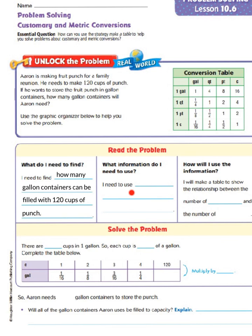So, I need to use the number of cups being made and the number of cups in one gallon. So then, how will I use the information? I will make a table to show the relationship between the number of cups and the number of gallons.